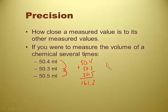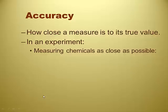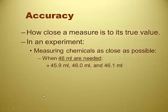Accuracy is how close a measure is to its true value. If you have an experiment where you're wanting to measure your chemicals as close as possible, it's being accurate. If you need 46 milliliters, and you measure 45.9, 46, and 46.1 milliliters, that's what we call accuracy. Because you're getting close to what you want, the 46.